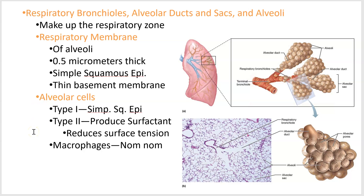Alveolar cells come in three types. Type one are basic simple squamous epithelium. Type two are specialized cells that produce a molecule called surfactant — its job is to reduce surface tension; you don't want those lungs contracting too hard. And lastly, you find macrophages, which we know what they do.